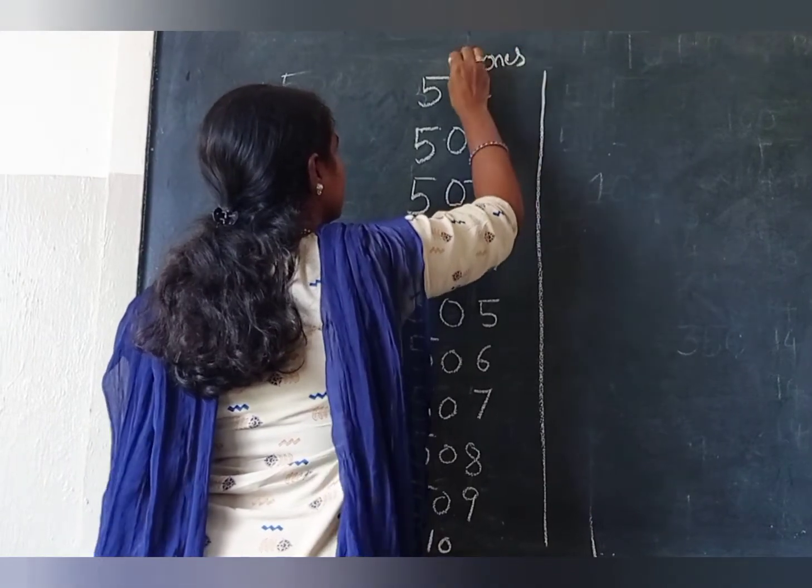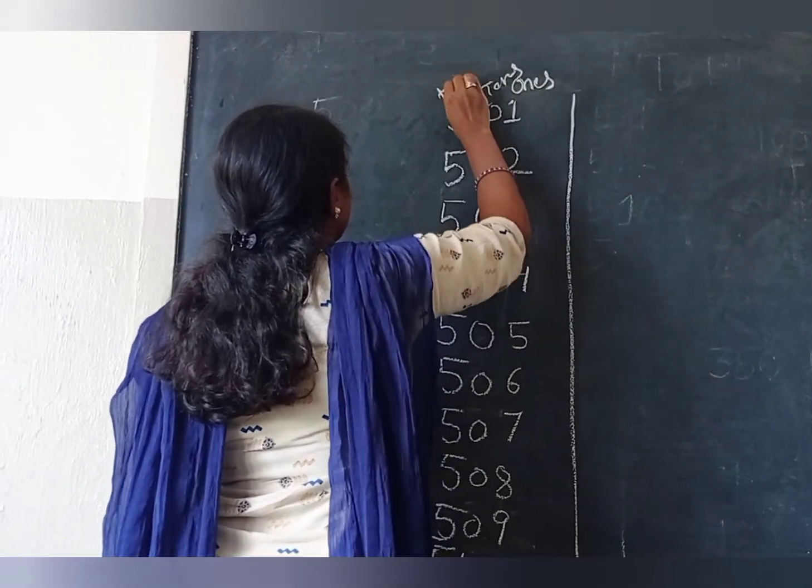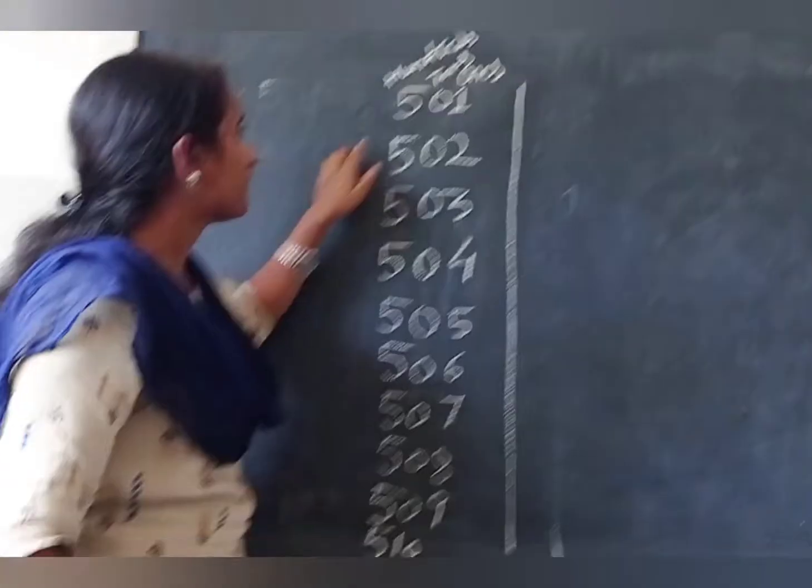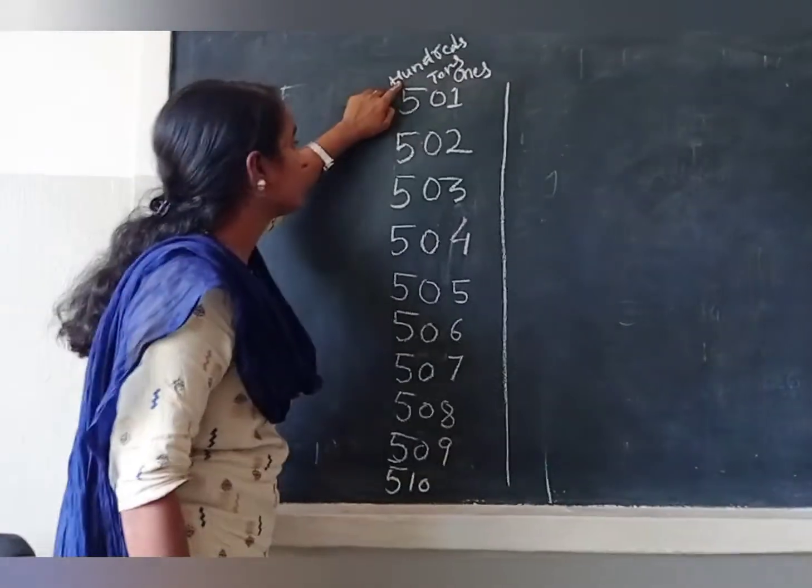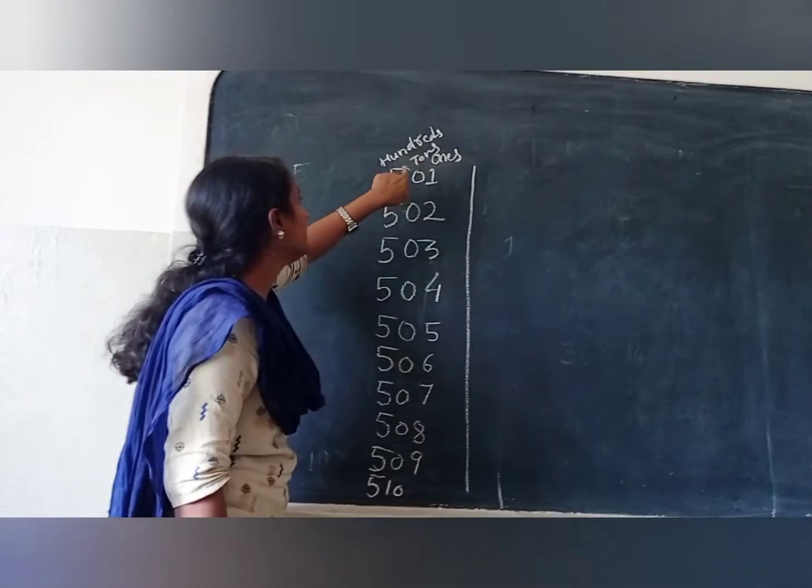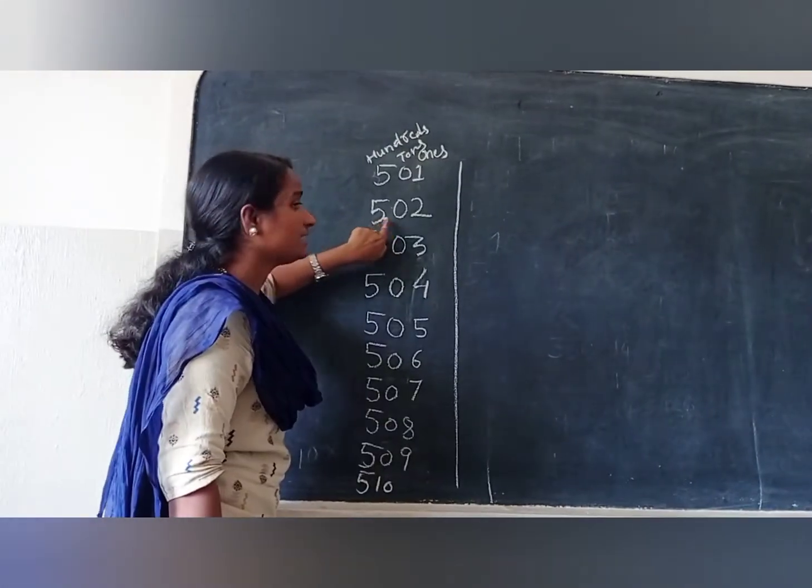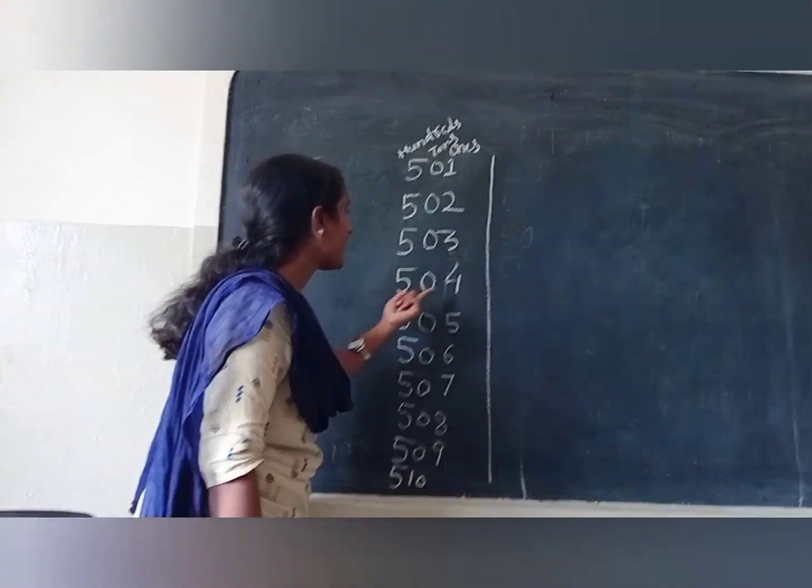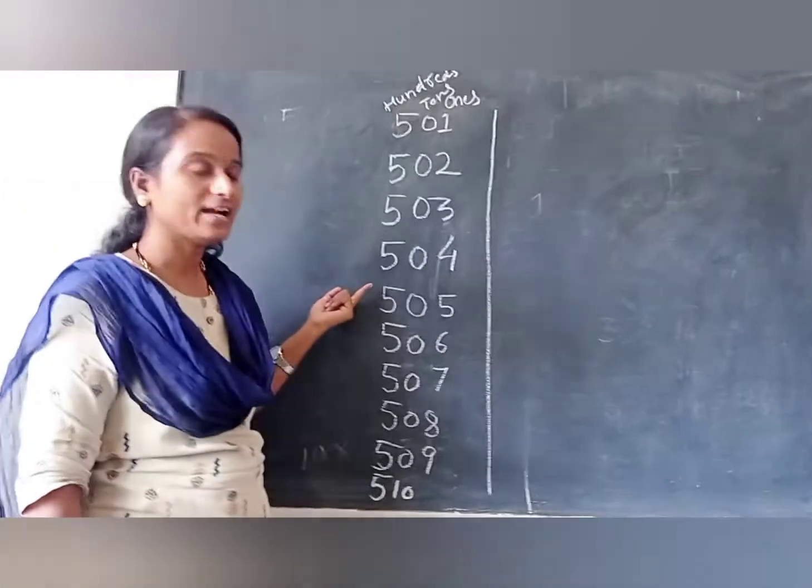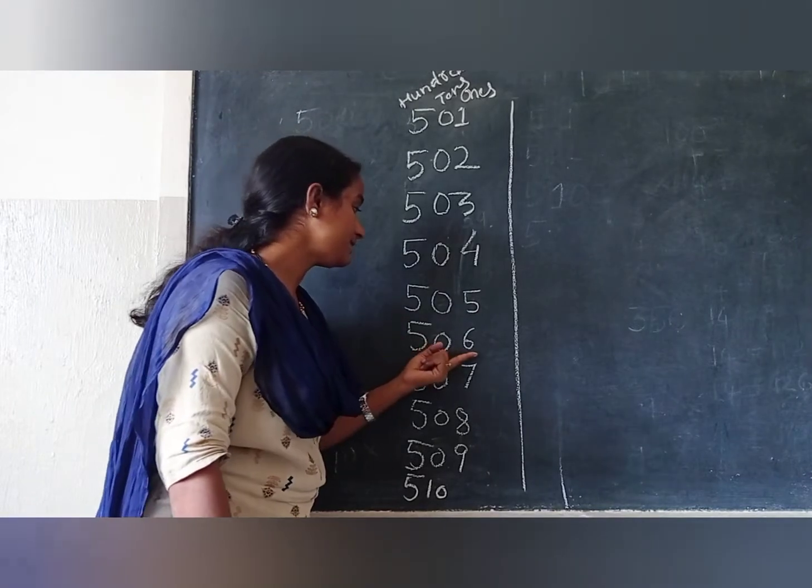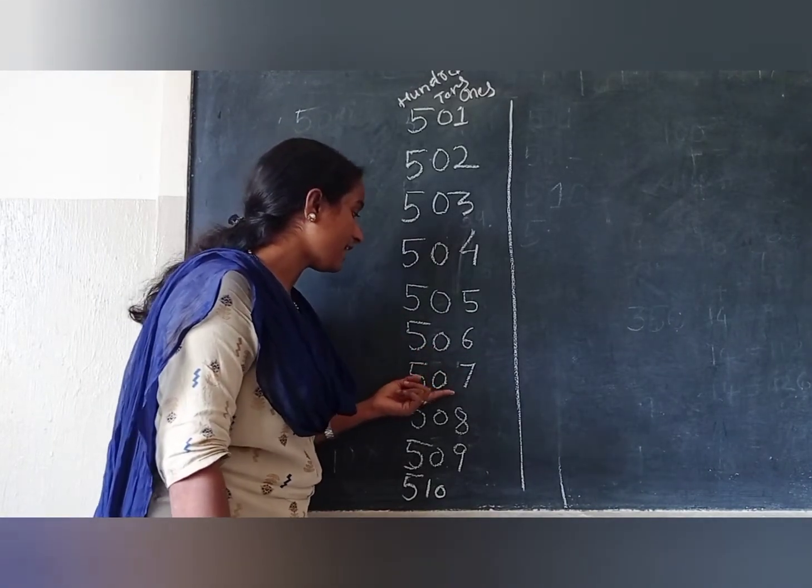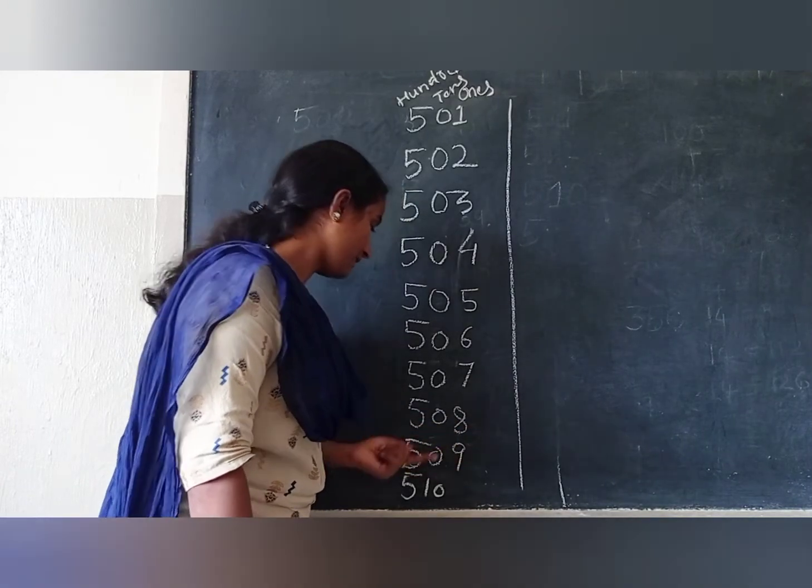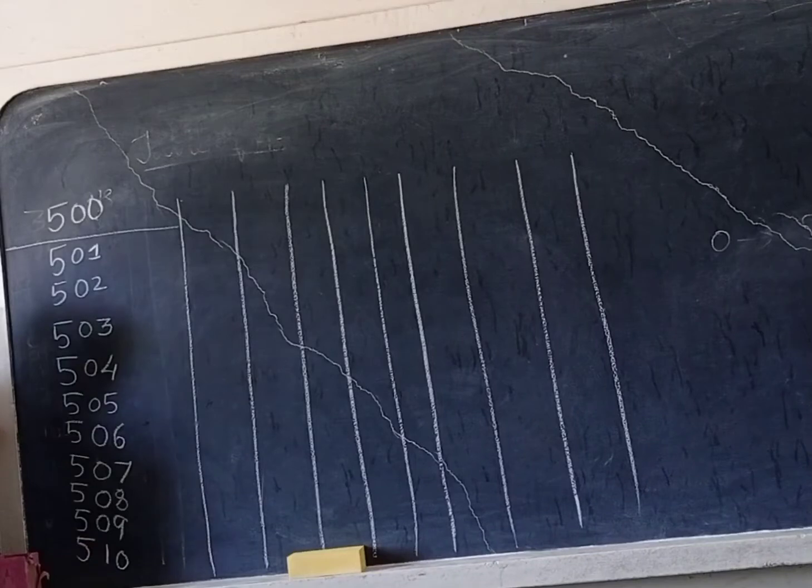Place values: 1's, 10's, 100's. This 5 is in the place of 100's, so it has value 500. So we read: 501, 502, 503, 504, 505, 506, 507, 508, 509, 510.